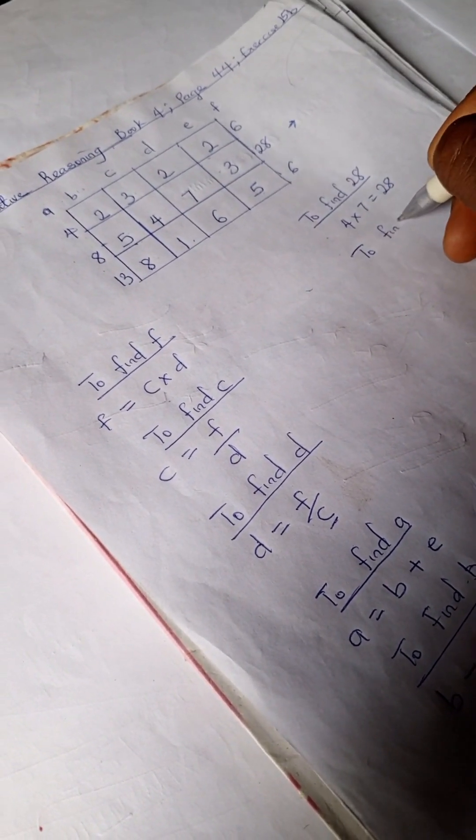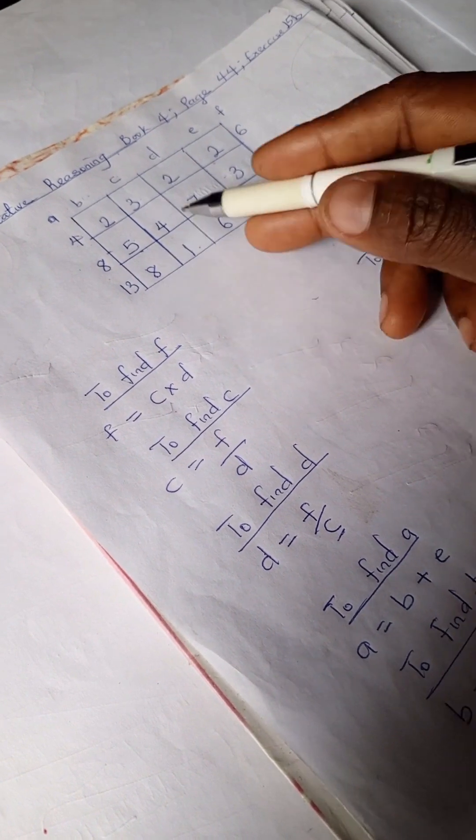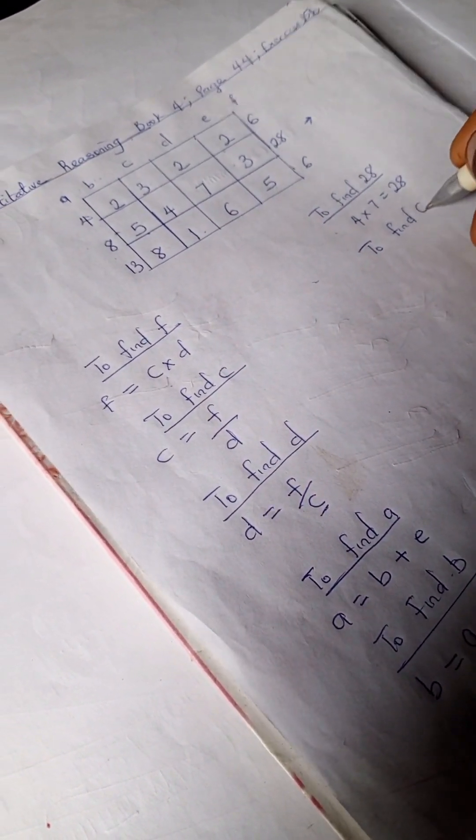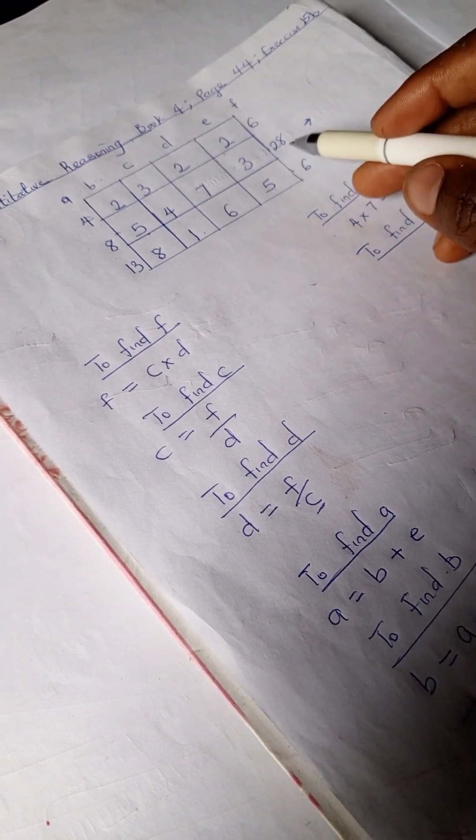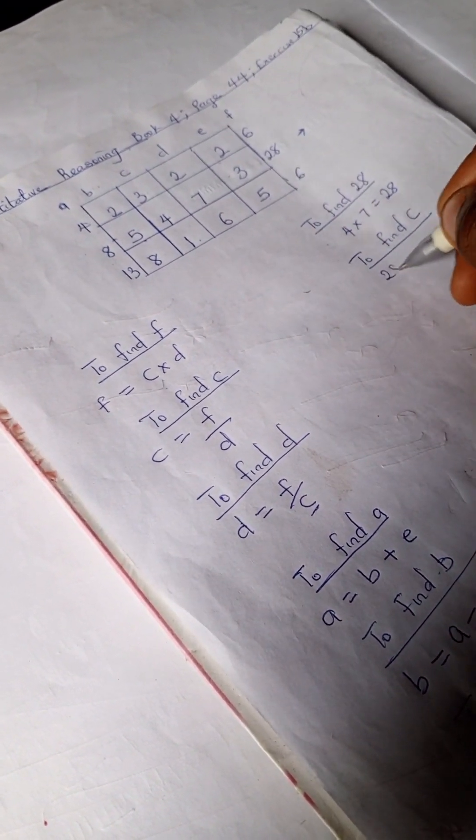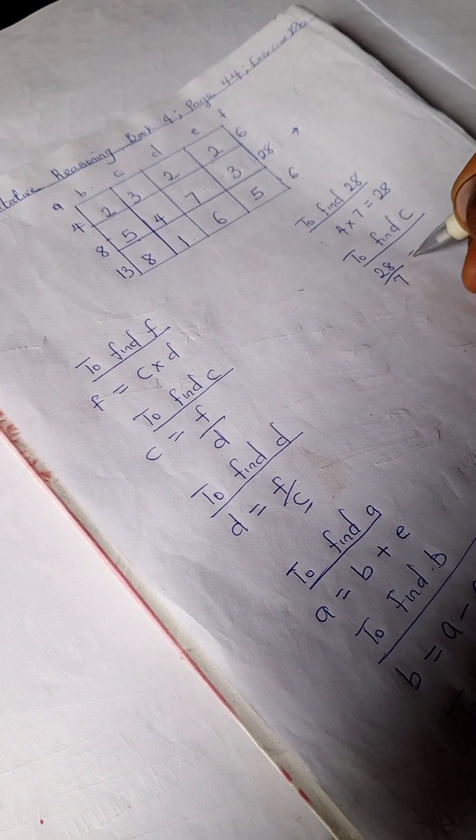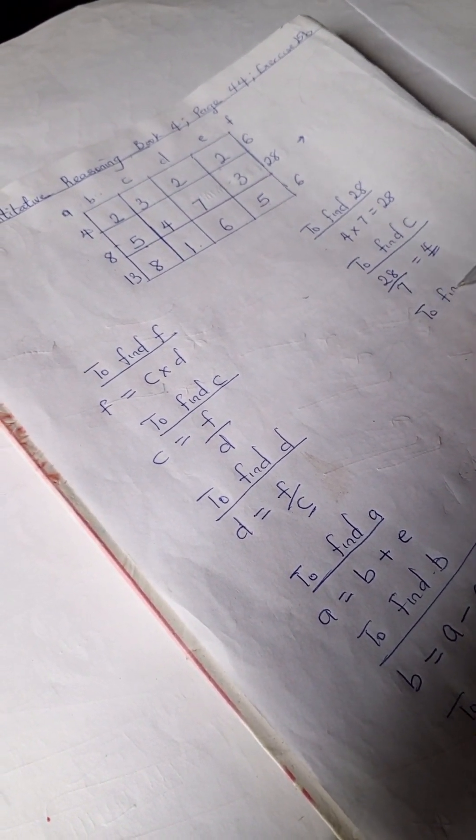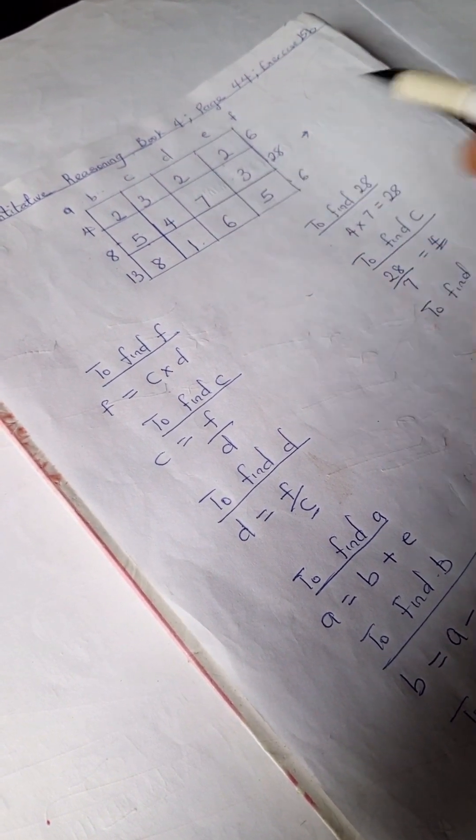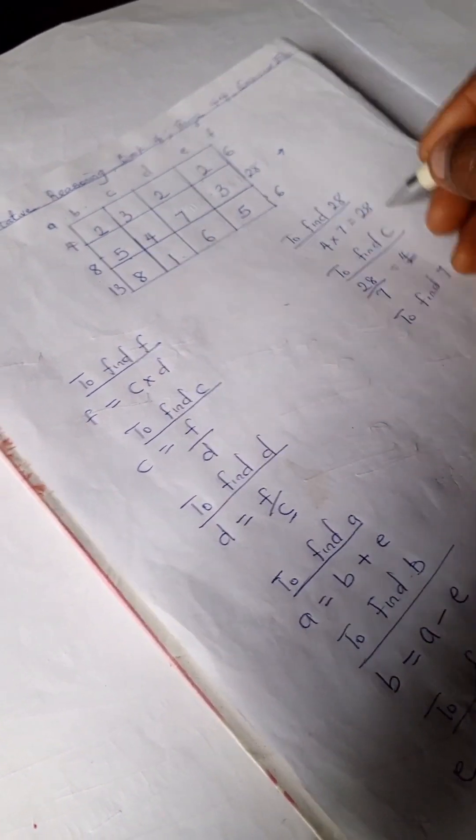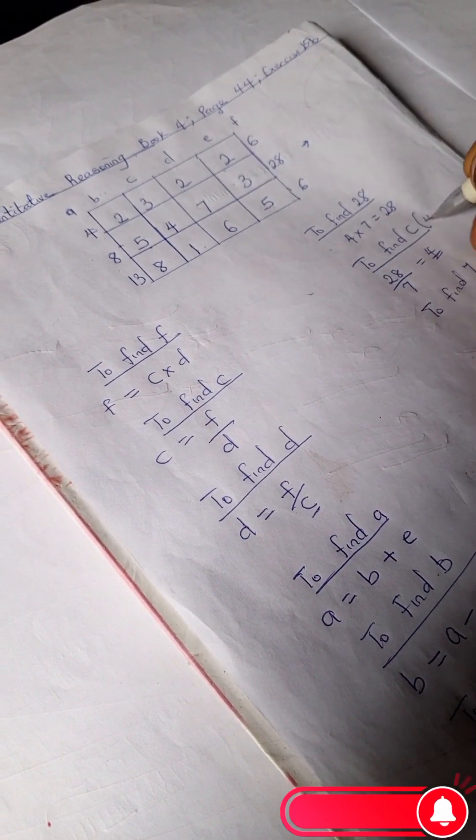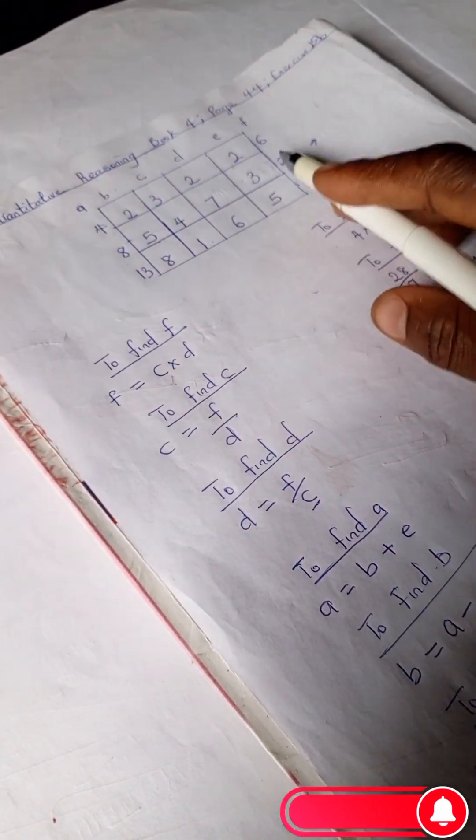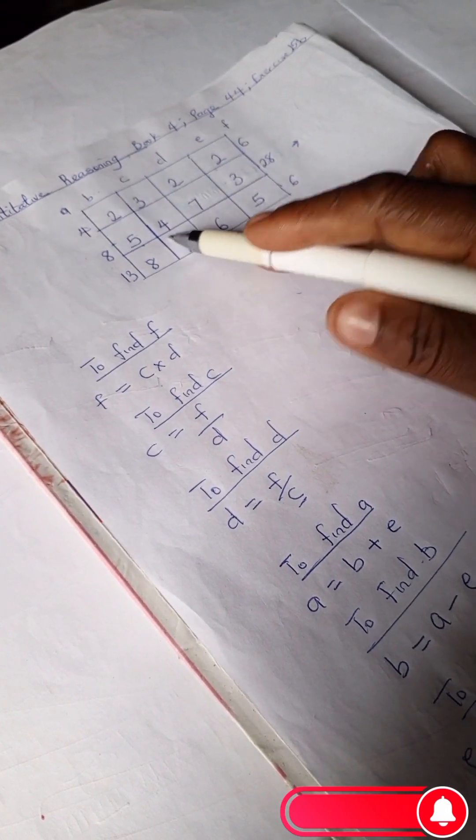So to find our C, to find C here, we have our 28 divided by 7, and we have our 4, right? And to find D, what's our D? Our D is 7, right? Remember this C is 4. So to find our 7, we have our F divided by C, which is our 28 divided by 4 is 7.